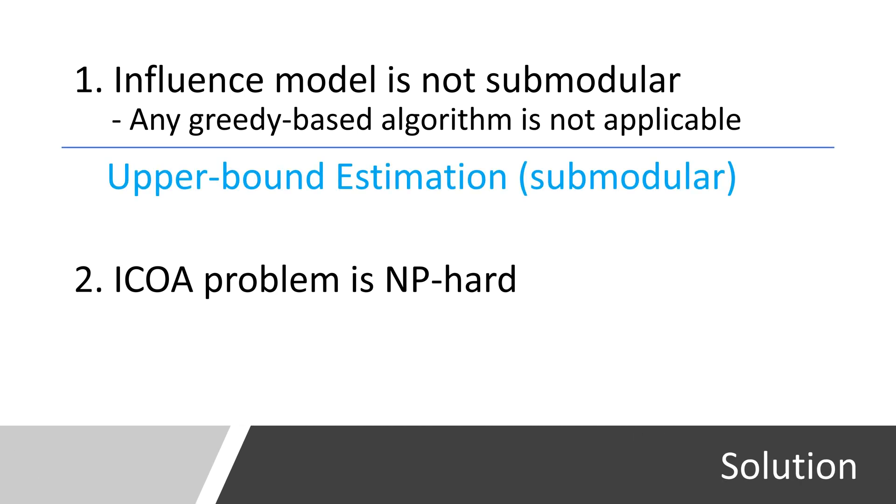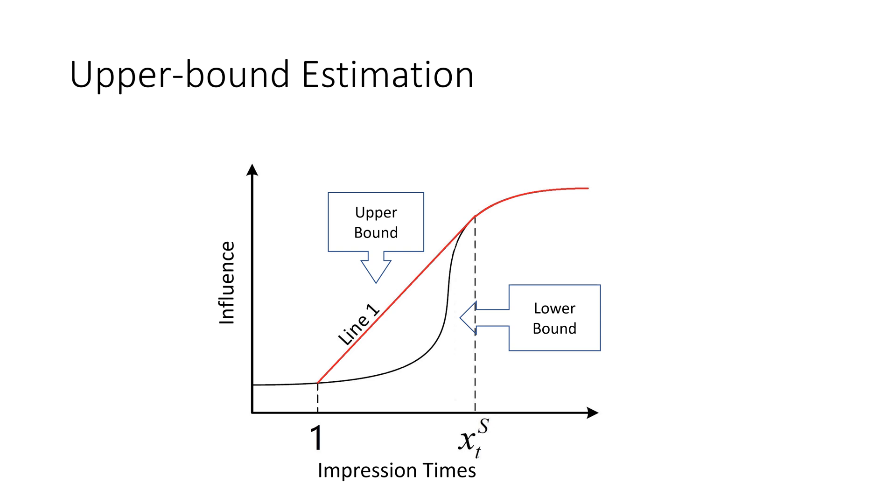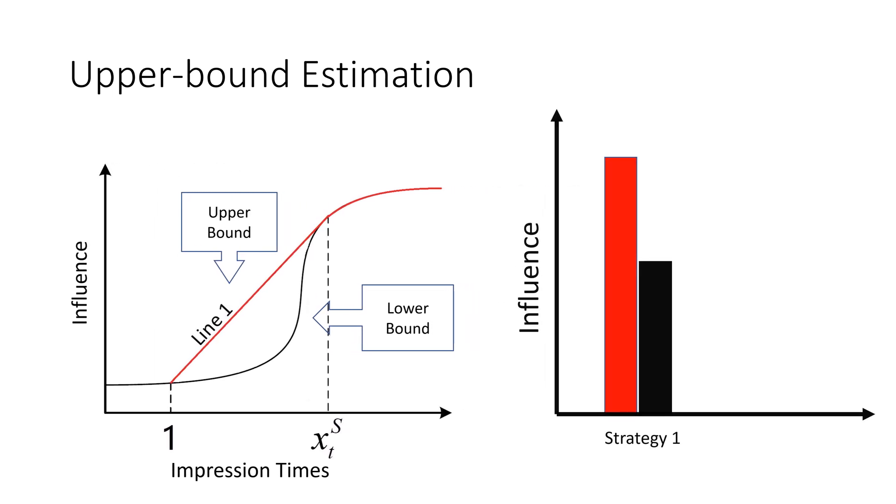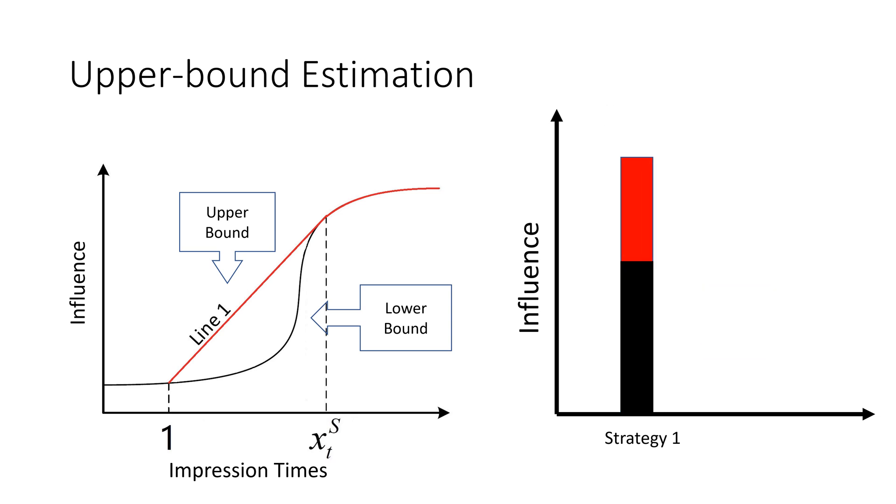For the upper bound estimation, we use a tangent line that intersects with the logistic s-curve. The red line is the upper bound influence. The logistic function measures the lower bound influence. By using the upper bound influence, the model becomes submodular. Based on the estimation function, we can calculate the upper bound and lower bound of each strategy. And we know that the lower bound is always lower or equal than the upper bound.